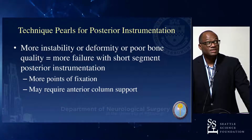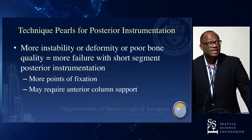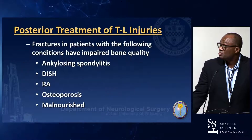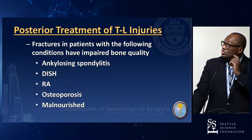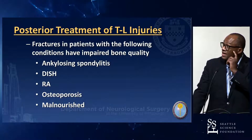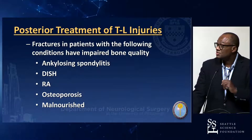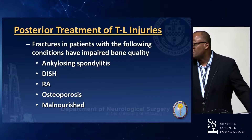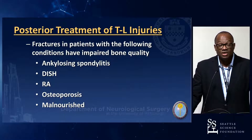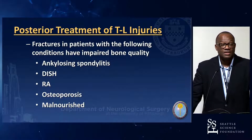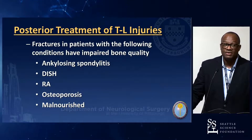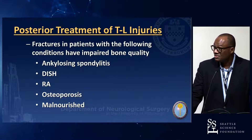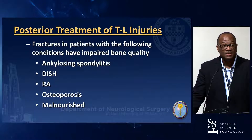Posterior instrumentation needs more points of fixation and sometimes may require anterior support. The bad cases requiring posterior surgery include ankylosing spondylitis, DISH, rheumatoid arthritis, metabolic bone disease, osteoporosis, the malnourished — long segments and posterior surgery. Short segments for any of these have resulted in significant complications.